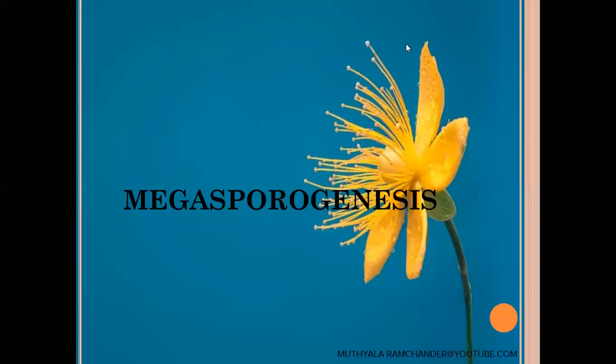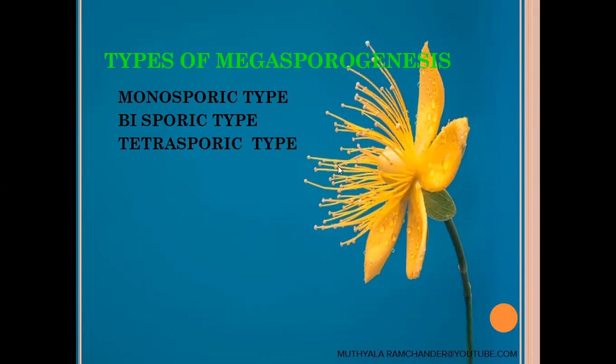Megasporogenesis in angiosperms: Megasporogenesis means megaspores or embryosacs are developed from the ovule. Megaspores are also called embryosacs and are in haploid condition. In angiosperms, mainly three types of Megasporogenesis occur.